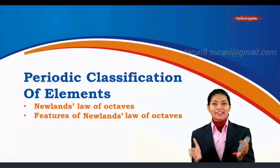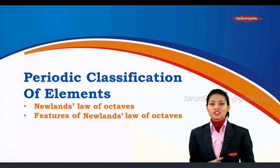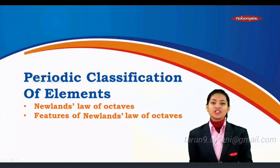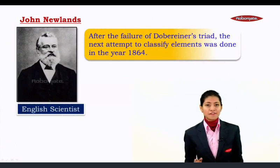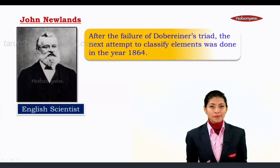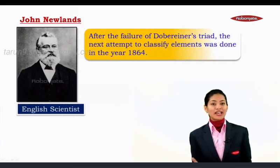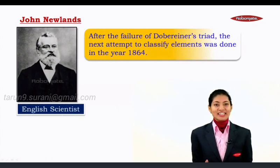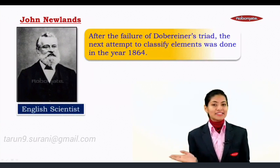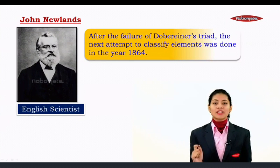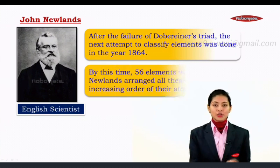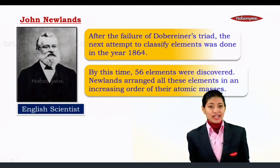To the next module. In this module we will cover Newlands law of octaves and the features of Newlands law of octaves. Now after the failure of Dobereiner's triad, the next attempt to classify the elements was done in the year 1864 by this English scientist who goes by the name of John Alexander Newlands. By this time, 56 elements were discovered.